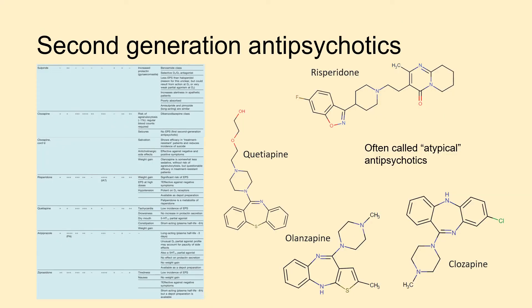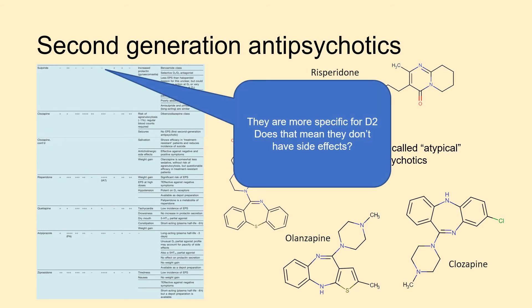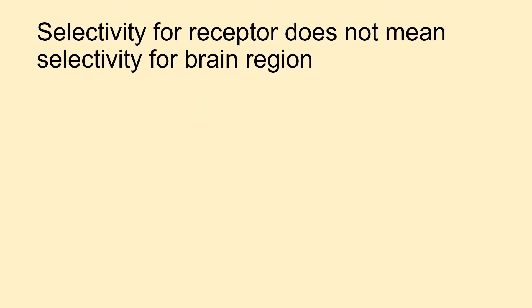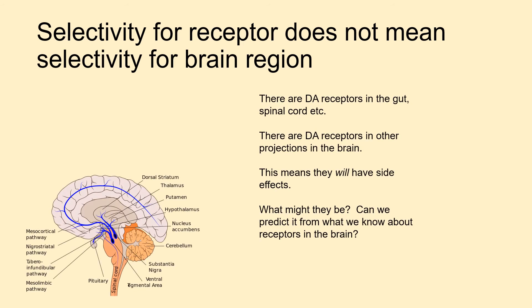Second-generation antipsychotics to be aware of include risperidone, quetiapine, olanzapine, and clozapine. Don't worry about their structures — just recognise the names. They tend to be more selective for D2 than first-generation antipsychotics, but selectivity for a receptor does not mean selectivity for a brain region. Dopamine receptors exist in the gut, spinal cord, and other brain projections, so these drugs will still have side effects.